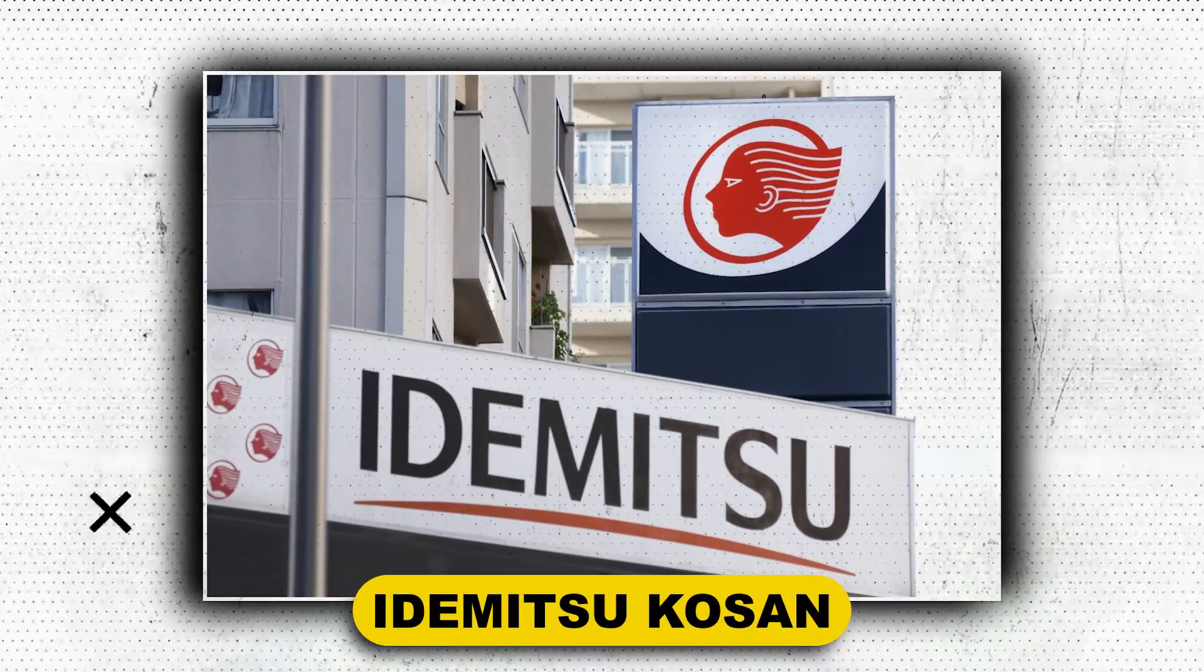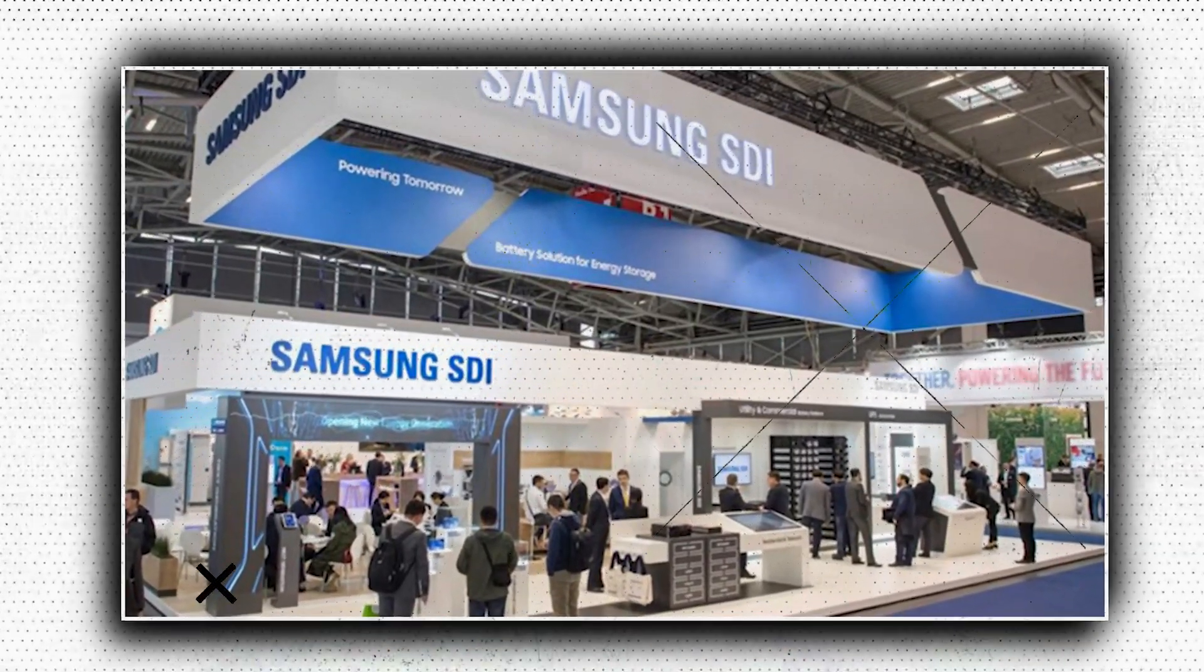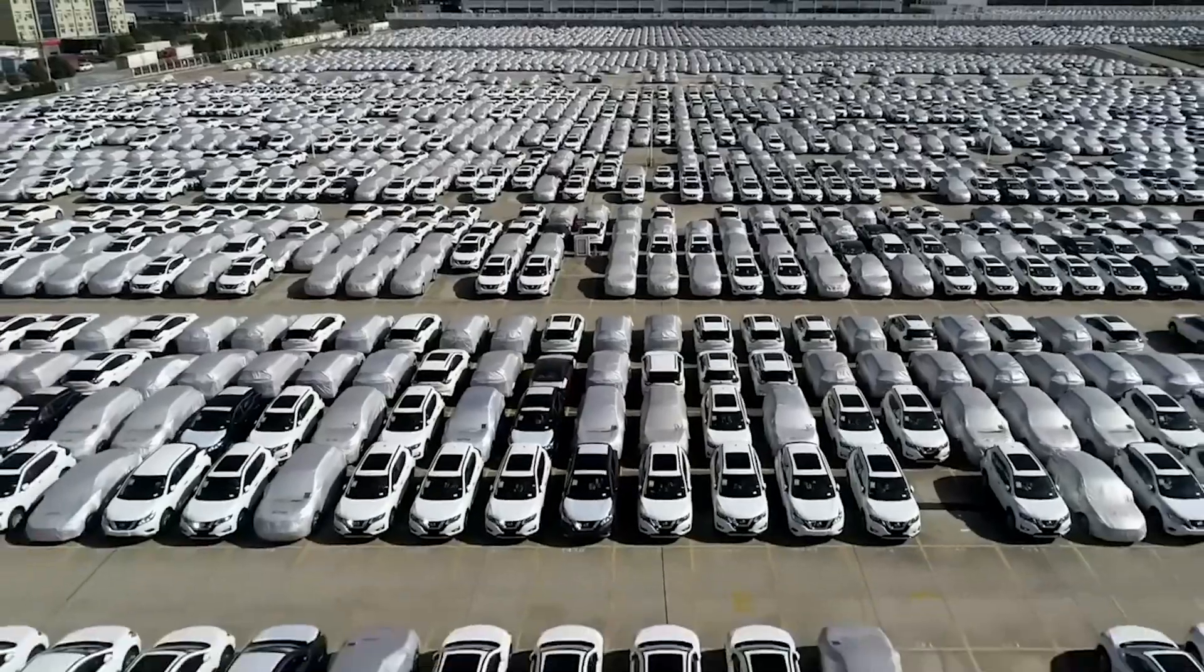Idemitsu Kosin is the owner of 272 patents. Only one non-Japanese company, Samsung Electronics, entered the top five, coming in fourth. Overall, six of the top 10 positions were held by Japanese businesses.